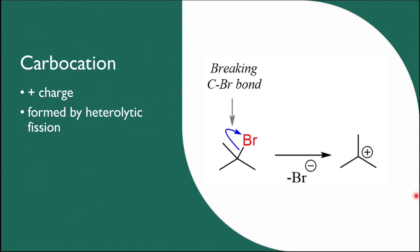A carbocation is a carbon ion which is formed by heterolytic bond breaking and carries a positive charge. Heterolytic bond breaking is a relatively slow process.